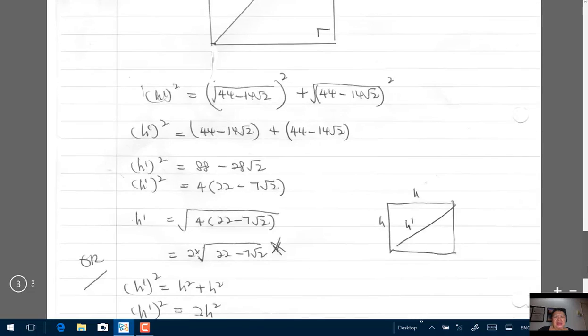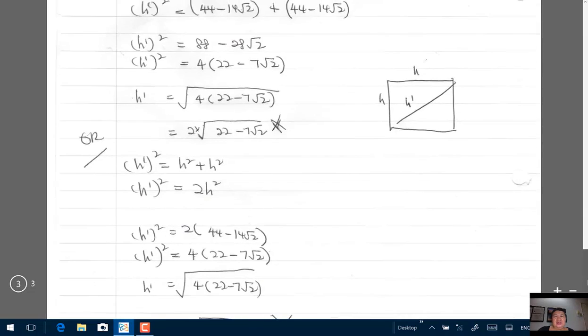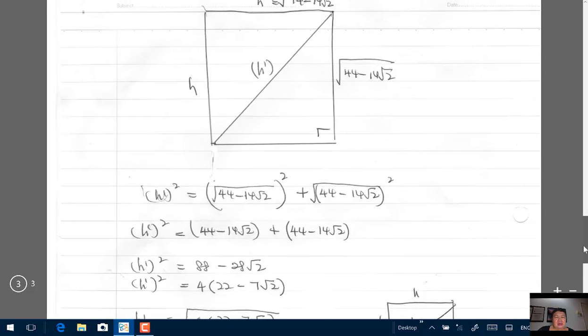The first method uses Pythagoras theorem, which says the sum of the squares of both shorter sides equals the square of the hypotenuse. So h1 squared equals square root of this complicated expression, which is 44 minus 14 root 2 squared.